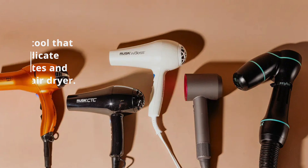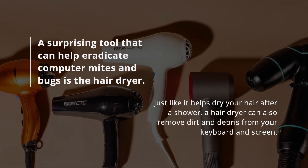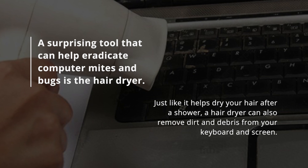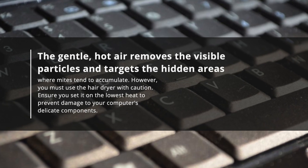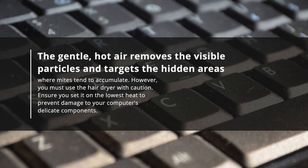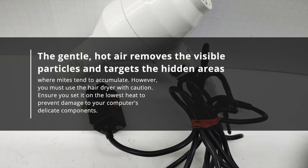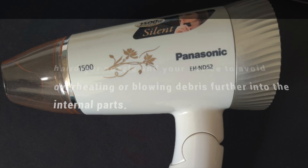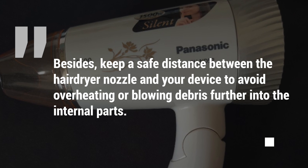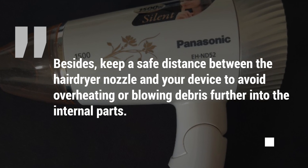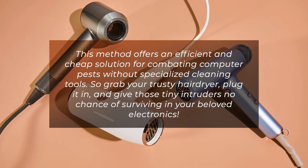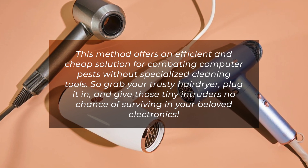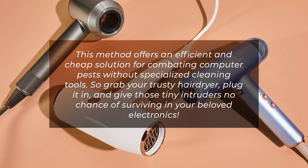4. Use a hair dryer. A surprising tool that can help eradicate computer mites and bugs is the hair dryer. Just like it helps dry your hair after a shower, a hair dryer can also remove dirt and debris from your keyboard and screen. The gentle hot air removes visible particles and targets hidden areas where mites tend to accumulate. However, you must use the hair dryer with caution — set it on the lowest heat to prevent damage to your computer's delicate components, and keep a safe distance between the nozzle and your device to avoid overheating or blowing debris further into the internal parts. This method offers an efficient and cheap solution for combating computer pests without specialized cleaning tools.